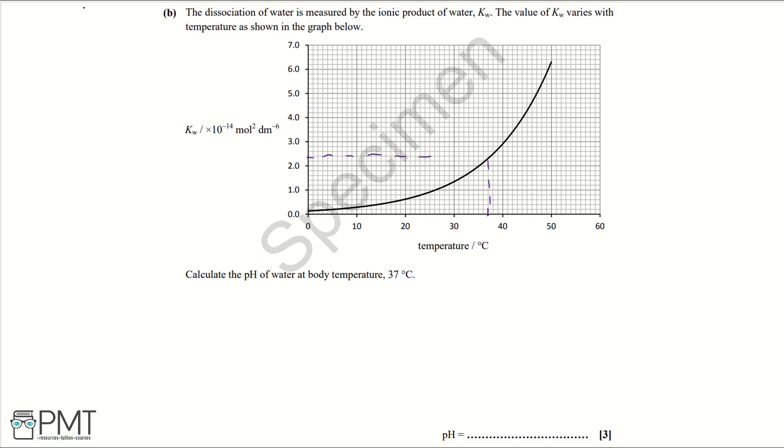So our Kw value, if we quickly jot this down, is 2.4 times 10⁻¹⁴, and that's because of the units of the graph: mol² dm⁻⁶. Then we're going to use the equation Kw equals [H⁺]², and that's because we're assuming that H⁺ and OH⁻ are the same concentration. That's another way of writing this equation.